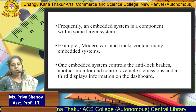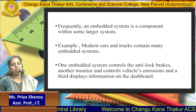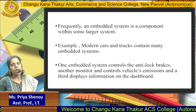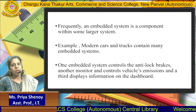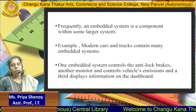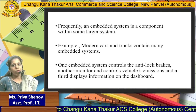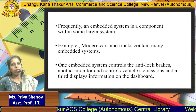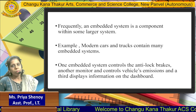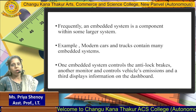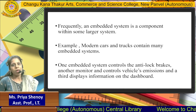Continuing further, frequently an Embedded System is a component within some larger system. If we consider such complex examples, we can consider modern cars or trucks that may contain Embedded Systems. The Embedded Systems in a particular car or truck may be part of many Embedded Systems included. One of the Embedded Systems will be controlling the anti-lock brakes, another will be monitoring and controlling the emission of the vehicle, and a third Embedded System may display information on the dashboard. In some cases these Embedded Systems may be designed to communicate with one another as well, though that is not really a requirement.